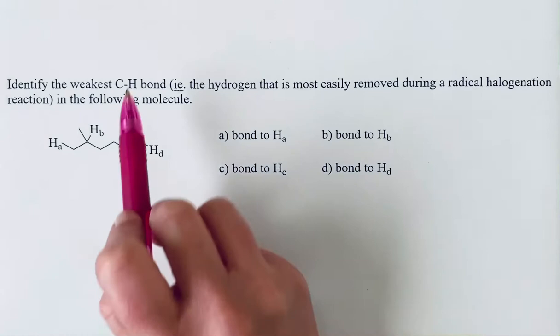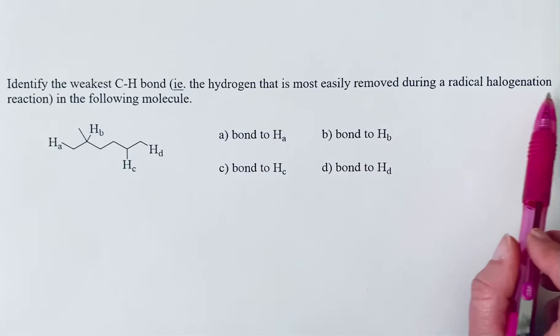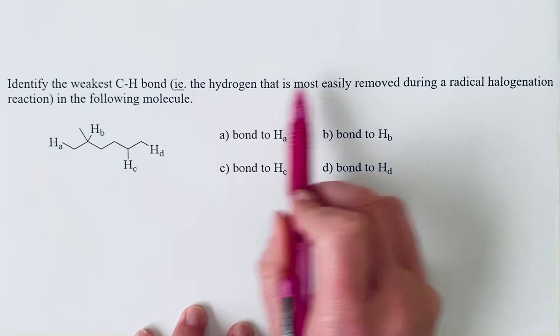Identify the weakest C-H bond, and we are told that really means the hydrogen that is most easily removed during a radical halogenation reaction from this molecule.